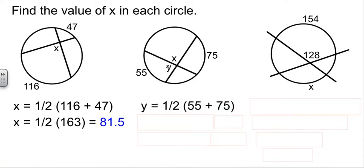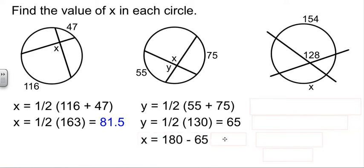Y will be half of 55 plus 75. That's half of 130, which is 65 degrees. Well, if this is 65, then X will be 180 minus that, which gives me X equals 115.